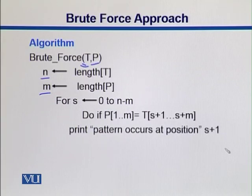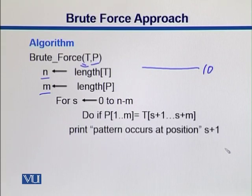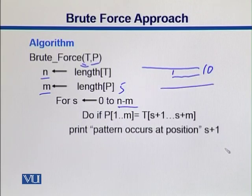The for loop goes from 0 to N minus M. For example, if N is of length 10 and P is of length 5, the loop goes up to position 5 — no more than that. So N minus M is used to avoid going out of bounds. The loop covers positions starting from 0 to N minus M, which in this case is 5.